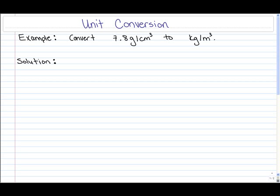In this video we're going to take a look at unit conversion, specifically from grams per cubic centimeter to kilograms per cubic meter. Remember that one gram per cubic centimeter is equivalent to a thousand kilograms per cubic meter.